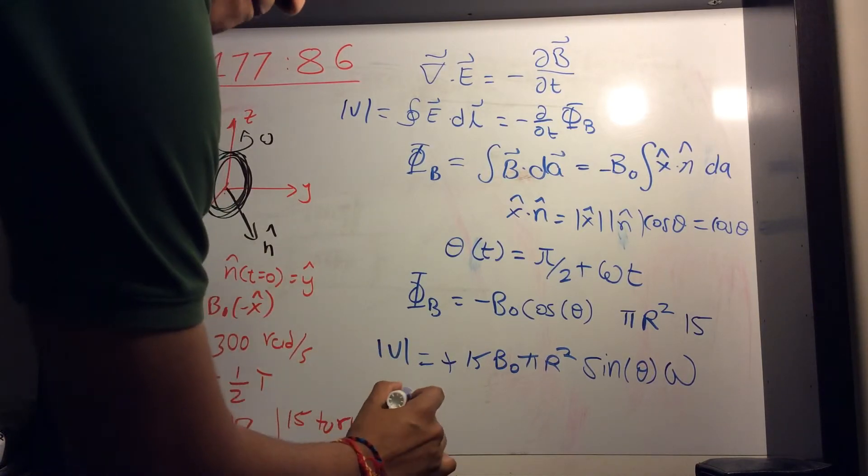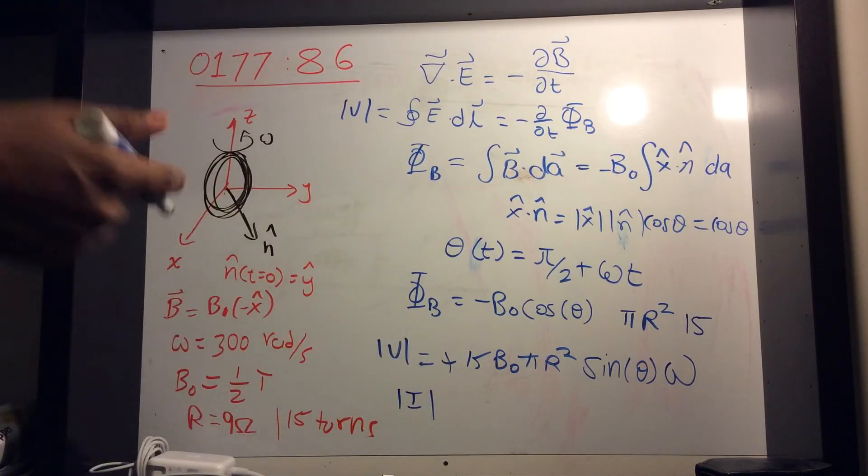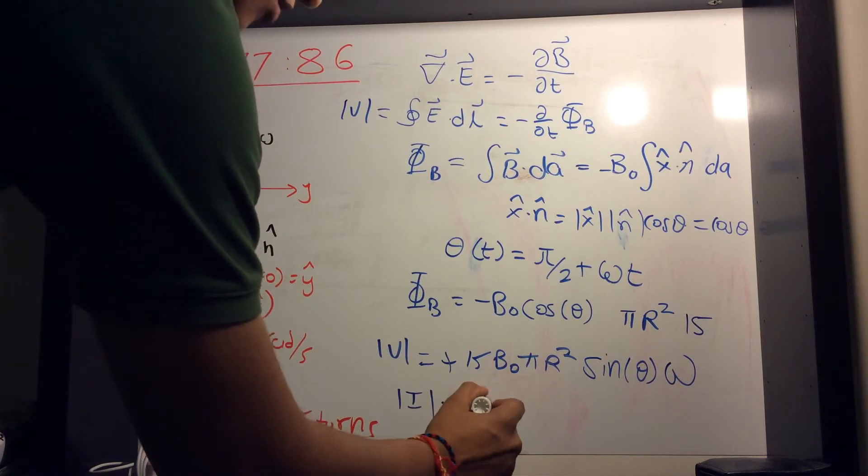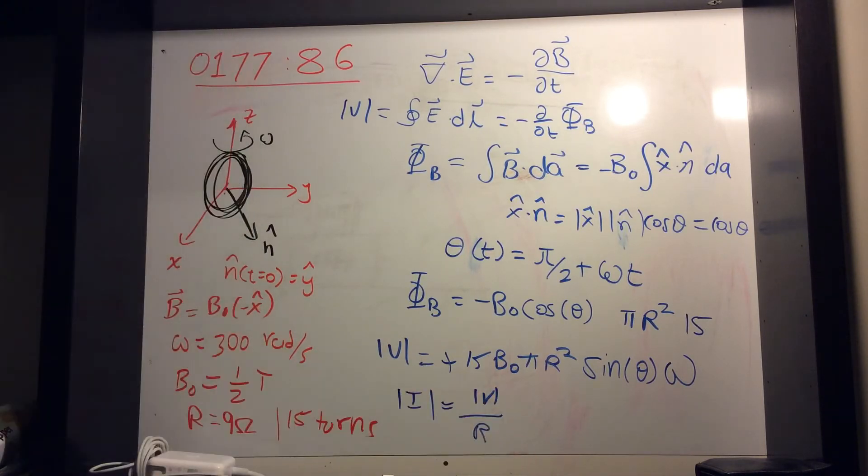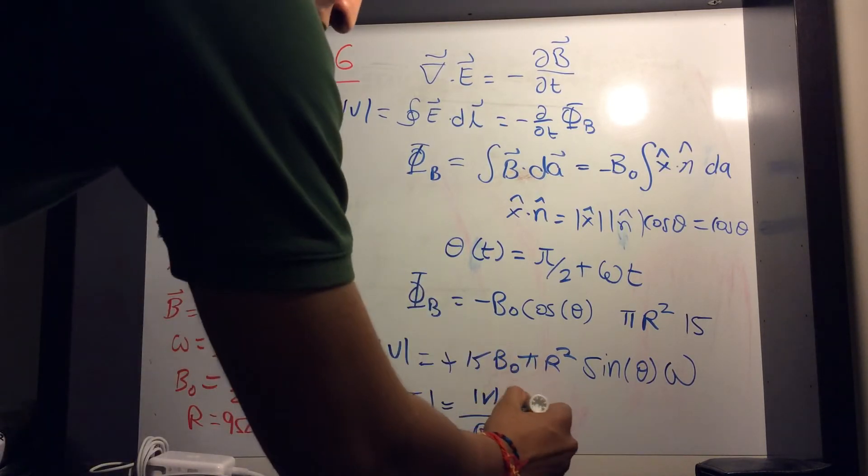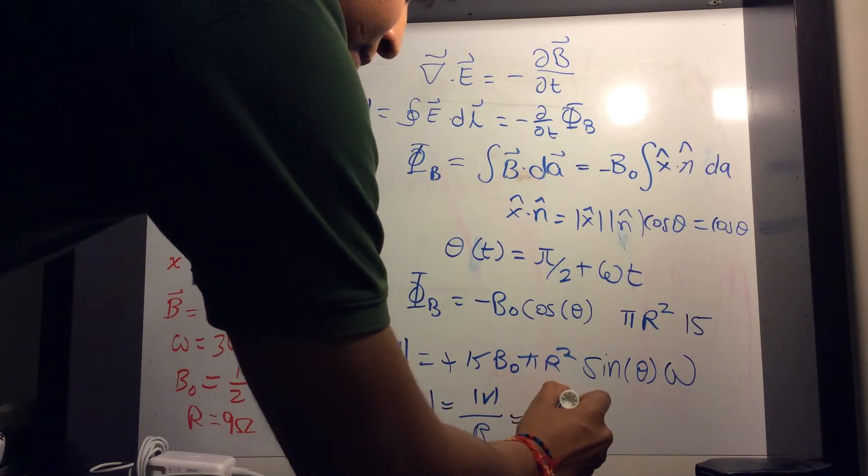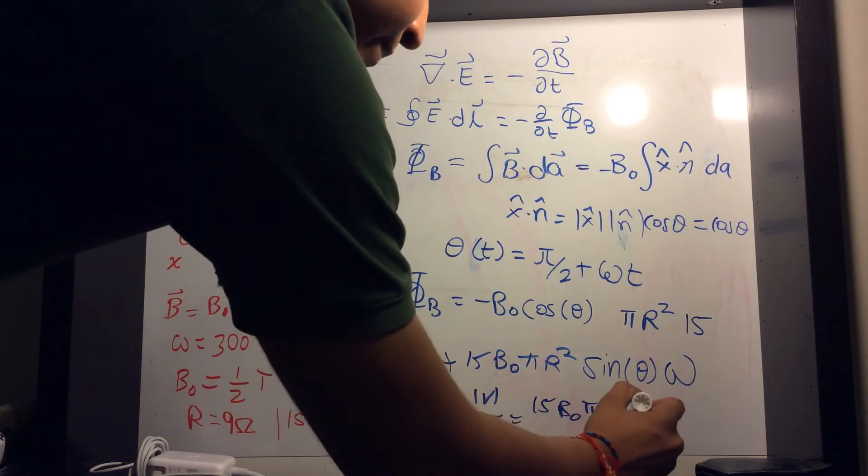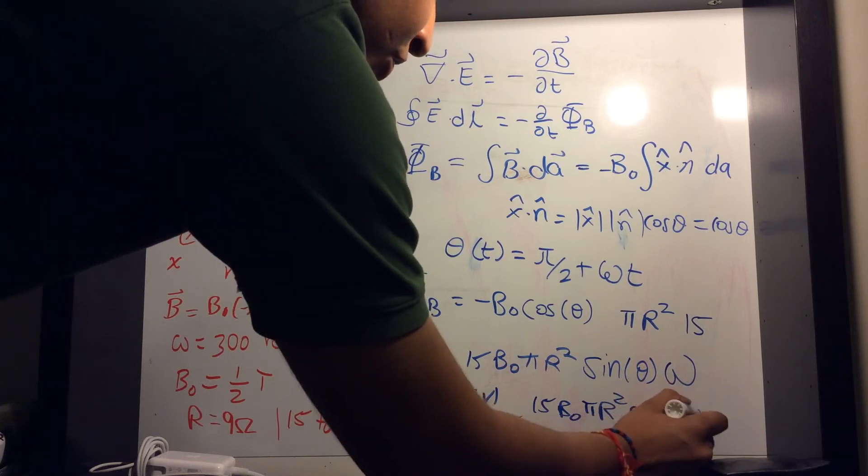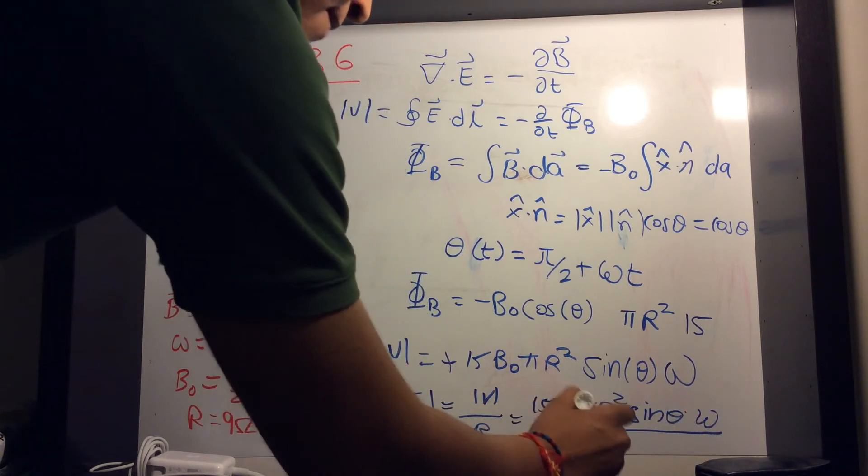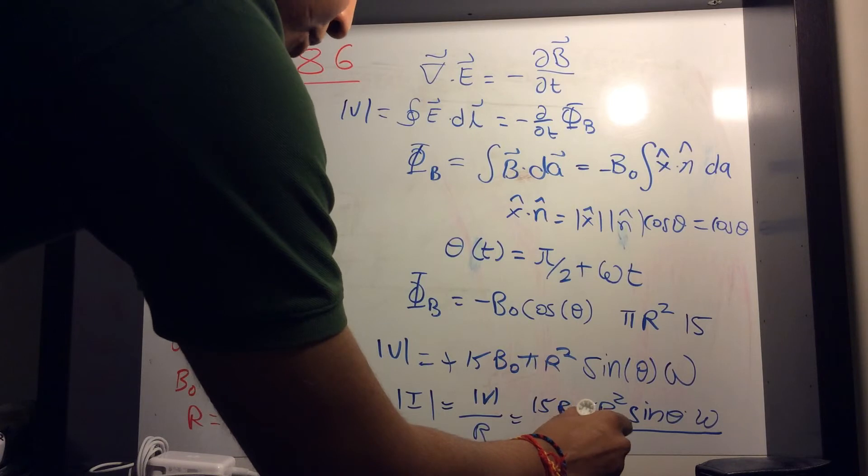So that's the voltage. So then current, just the magnitude of current, is magnitude of V over R. V equals IR. So that is just 15 B naught pi r squared sine of theta omega divided by resistance, which is 9 ohms.